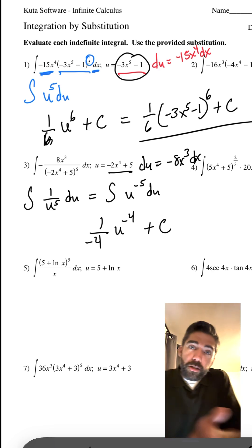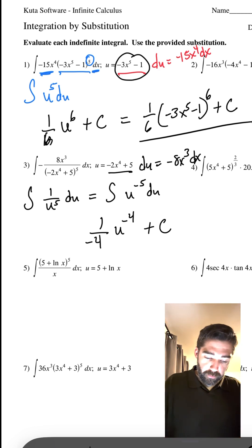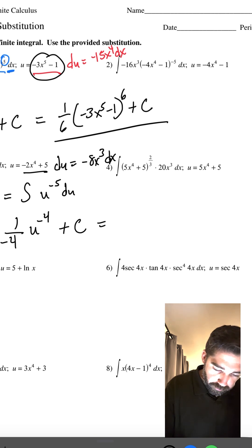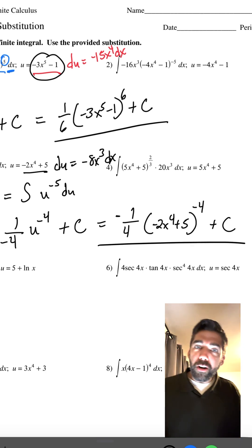Well, now you just plug U back into the equation. And we get 1 over 4, and it's a negative actually, times negative 2x to the fourth plus 5. That is our U raised to the negative fourth power plus C. That is our answer.